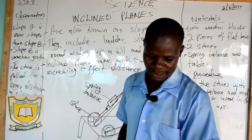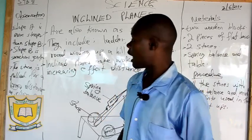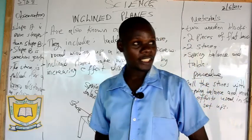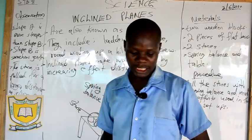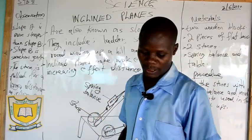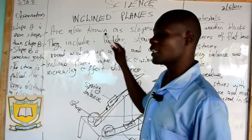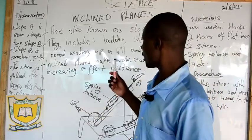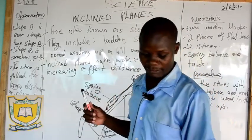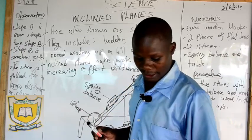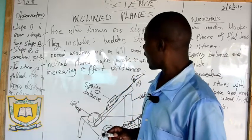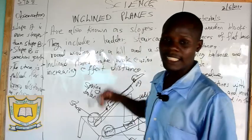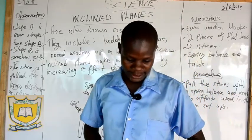Remember, we said that categories of machines — we had different categories of machines where we had the levers, the wedge, the inclined plane, and the single fixed pulley. So the levers you covered in standard seven; here in standard eight, we will have to deal with the inclined planes and also pulleys.